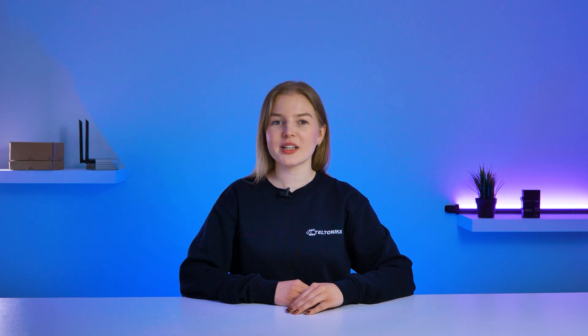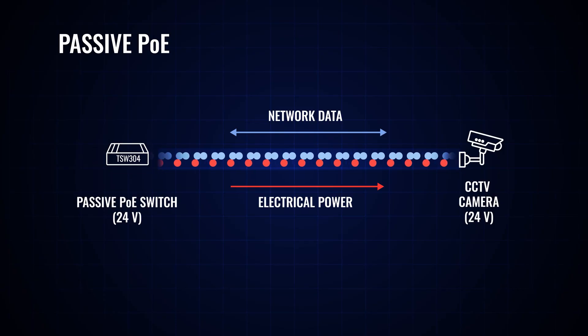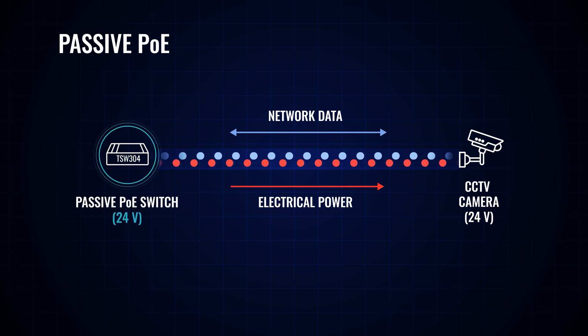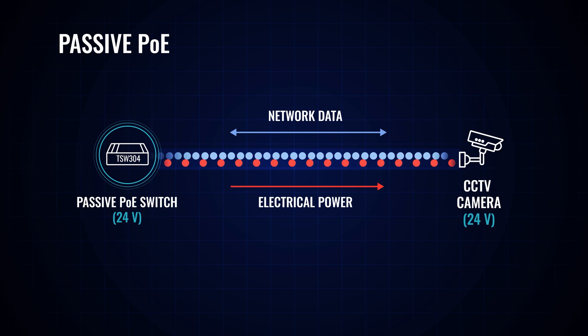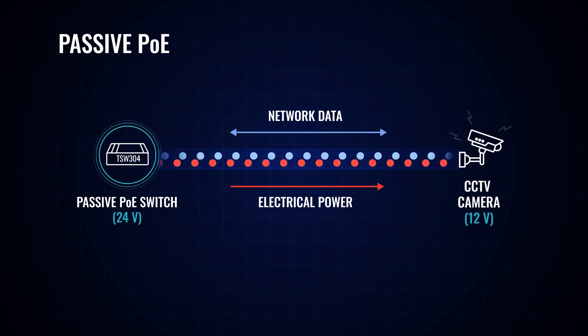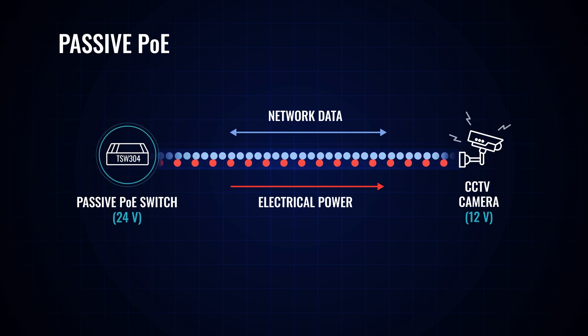Passive PoE works in a different manner. It doesn't perform any handshakes before supplying an internet connection as well as power, and provides as much of it as it can. So let's say you have a passive PoE switch that can supply 24V and you want to power up a CCTV camera that upholds the same amount of power — everything will work just fine. However, if your end device can uphold up to 12V but you power it with a passive PoE switch with 24V, you will most likely destroy your CCTV camera.